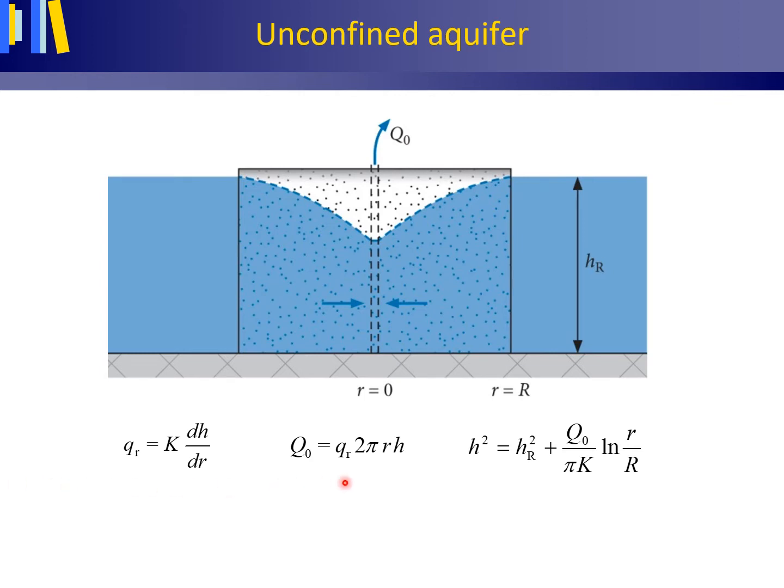Again, combining continuity and Darcy's law delivers the following equation for the potentiometric drawdown surface of a well in an unconfined aquifer. The equation holds from the outside of the well to the radius of influence of the pumped well, large R.